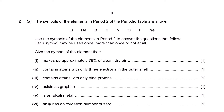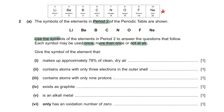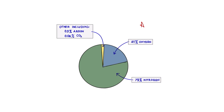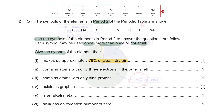Question 2A. The symbols of the elements in period 2 of the periodic table are shown. Use the symbols to answer the questions that follow. Each symbol may be used once, more than once, or not at all. Before answering, note that the approximate composition of clean dry air is 21% oxygen, 78% nitrogen, and the remainder consists of argon and carbon dioxide. So the element that makes up approximately 78% of clean dry air is nitrogen. Make sure you give only the symbol, not the element name.